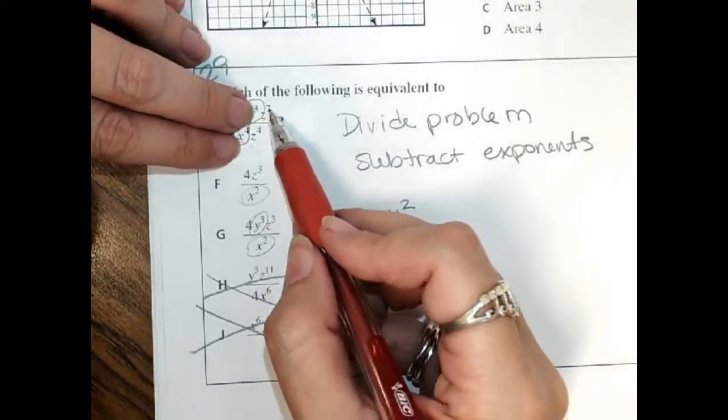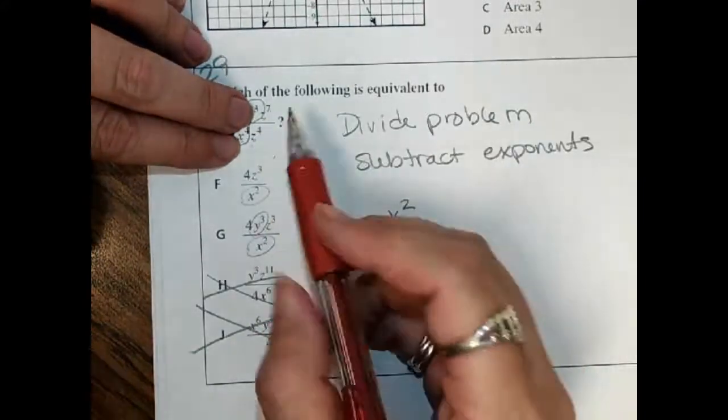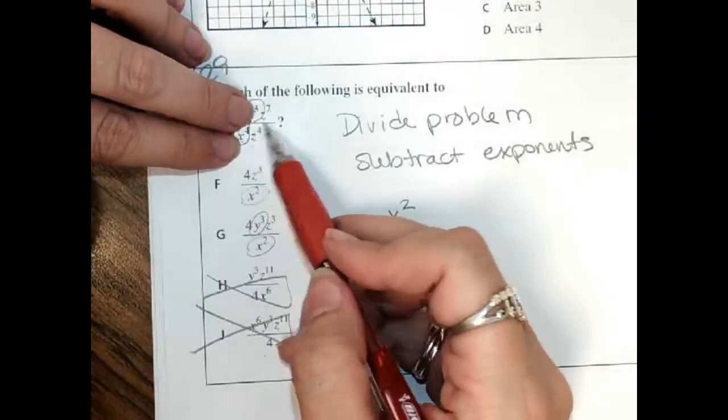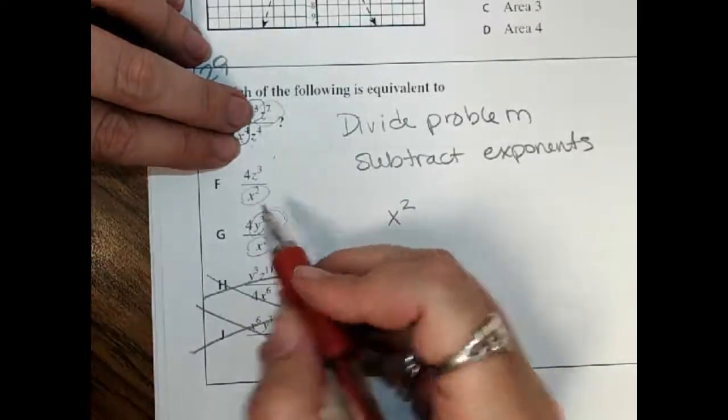And then z7 and z4, that makes z3 when I subtract it, and it's bigger on top, so it stays on top. So there's my answer, g.